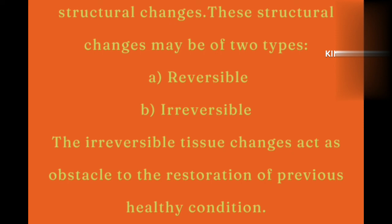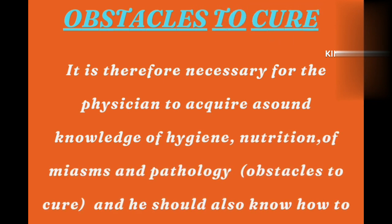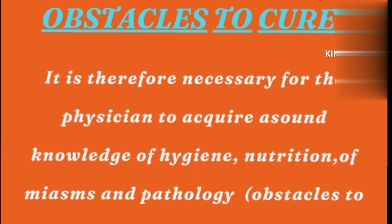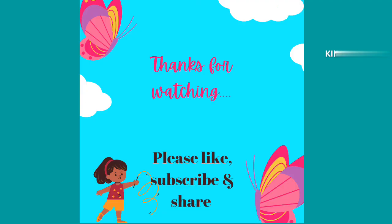So the obstacles to cure are: exciting and maintaining cause, miasmatic cause, and pathological cause. This is why the physician should have sound knowledge of all these things — exciting and maintaining cause, miasms, and pathology — and should know how to remove these obstacles so that the cure can be permanent. So this was the topic of Obstacles to Cure. Thanks everyone for watching.